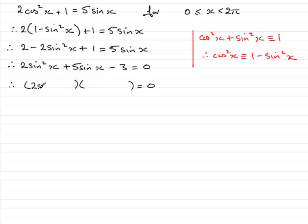We're going to have 2sinx and we'll have sinx there. And then two numbers multiply together to give minus 3. If we look closely, it's going to be minus 1 and plus 3 because when we multiply this out, we'll get our 2sin²x, 6sinx minus sinx. That's the 5sinx and then minus 3 equals 0. So that's fine.